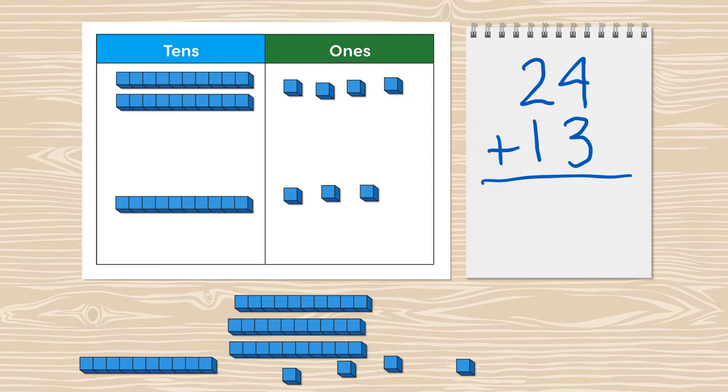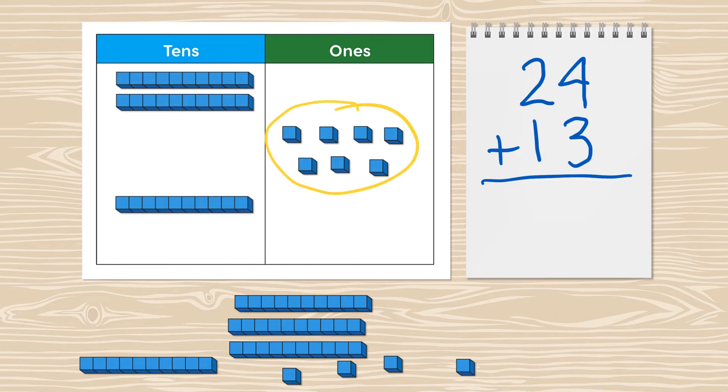First, bring the ones together and find the total. There are 7 ones in all. Write 7 in the ones column.